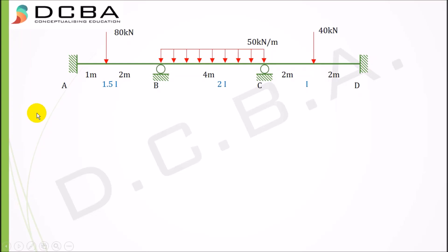Welcome to DCBA. Today I'm going to solve a problem that I had previously solved with the moment distribution method. This is a Type 1 problem — if you haven't seen that video, the link will be given in the description. We analyzed this beam with the moment distribution method, and now I'm going to construct the shear force diagram and bending moment diagram. This video was made due to requests from many people who wanted to see how SFD and BMD are constructed for an indeterminate beam.